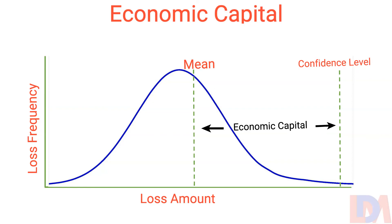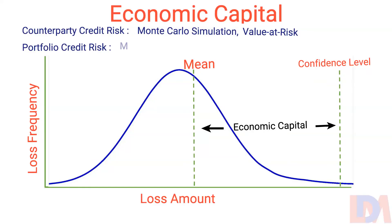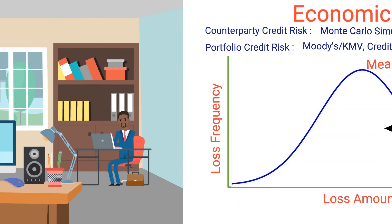Banks and financial institutions compute economic capital for counterparty credit risk by using the Monte Carlo simulation method or the value at risk method. For credit portfolio risk modeling, banks and financial institutions often use Moody's KMV, Credit Metrics, and Credit Risk Plus. Thank you.